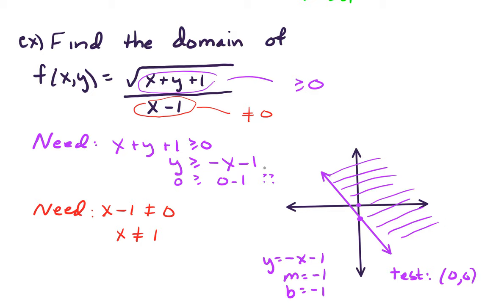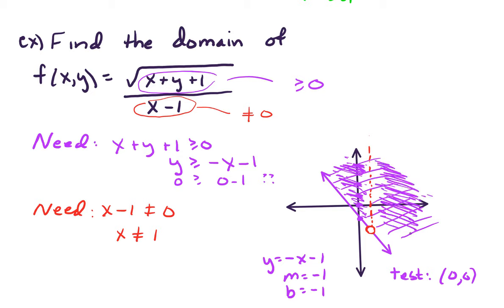The other piece is that x cannot equal 1. So x equals 1 is a vertical line right here, and we cannot have any points that live on it. We'll mark it with an open circle and a dotted vertical line. In terms of the domain, we have all points above the line y equals negative x minus 1, excluding the vertical line x equals 1.